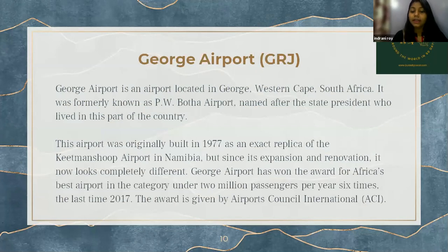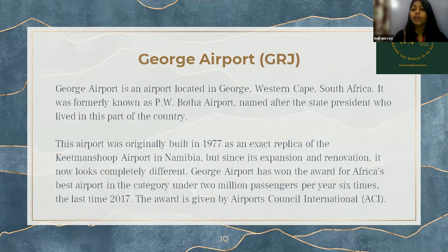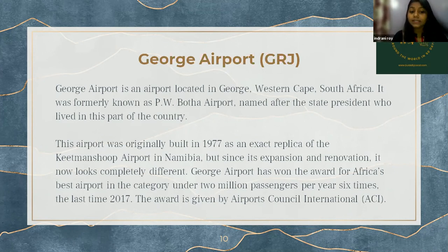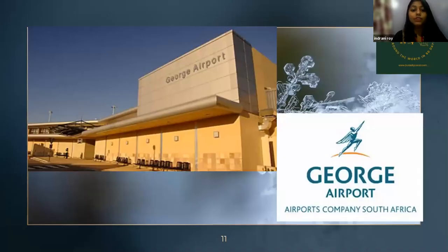Next one is George Airport, located in George, Western Cape, South Africa. It was formerly known as P.W. Botha Airport, named after the state president who lived in this part of the country. This airport was originally built in 1977 as an exact replica of Keetmanshoop Airport in Namibia, but since its expansion and renovation its look is completely different. George Airport has won the award for Africa's best airport in the category under 2 million passengers per year six times — the last time in 2017 — given by Airports Council International, ACI. Here you can see the picture of George Airport.